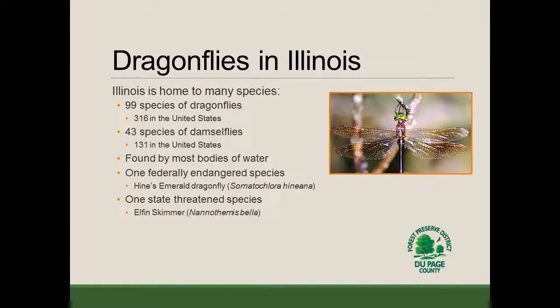Let's get a little more specific and talk about dragonflies in Illinois. Illinois is home to many different species of dragonflies and damselflies. Currently, the estimate is that there are 99 species of dragonflies in Illinois, out of 316 total in the United States. Illinois is also home to approximately 43 species of damselflies, out of 131 in the United States. So for both dragonflies and damselflies, Illinois is home to about a third of the total species in the United States.